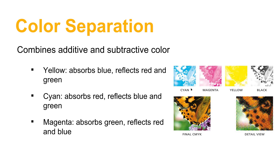The way that works is a combination of additive and subtractive color theory, because what our eyes see is the additive color, while what's happening on the paper with the pigments of ink is subtractive color. The yellow ink is actually absorbing blue light — that's the whole purpose of yellow ink, to absorb the blue. It reflects the red and the green. So what reaches our retina and the cone cells is red and green light, which the brain interprets as yellow.